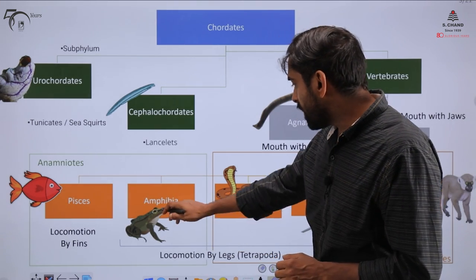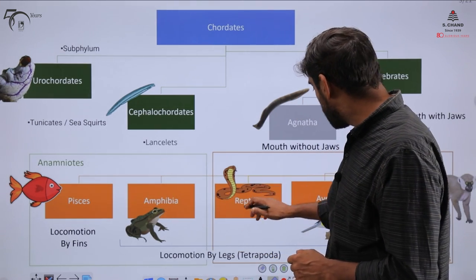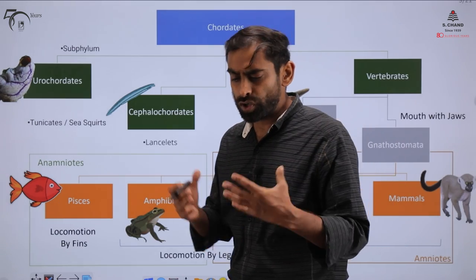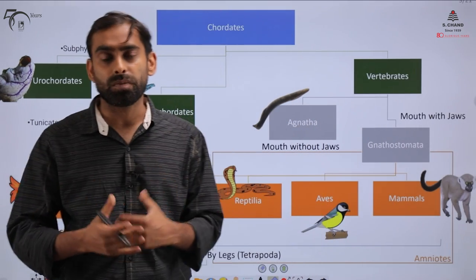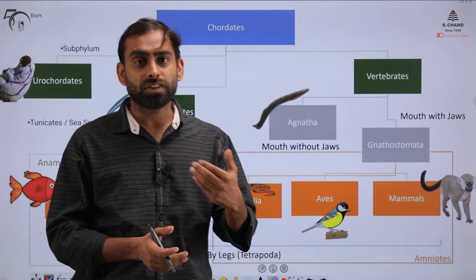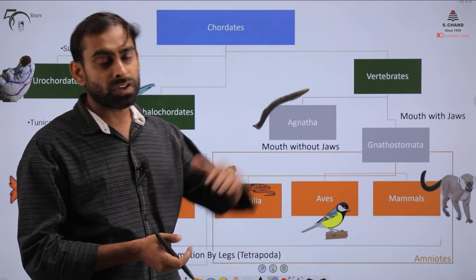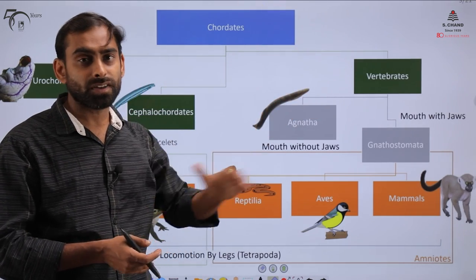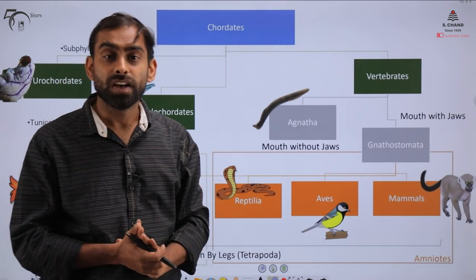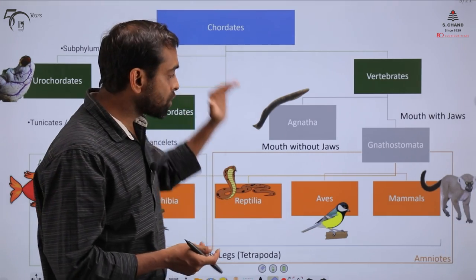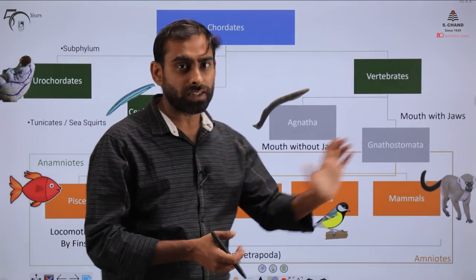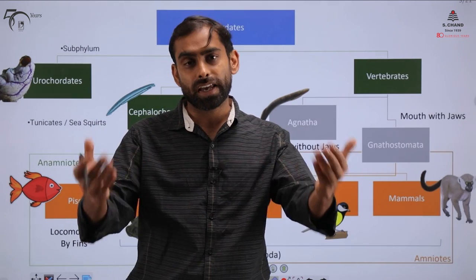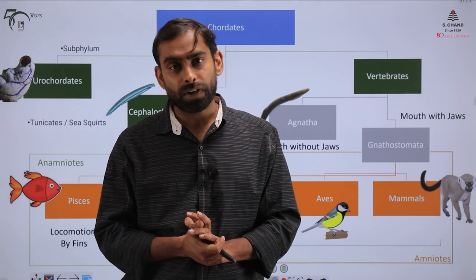The five classes of Gnathostomata are: Pisces, Amphibia, Reptilia, Aves, and Mammals. You should remember that linear taxonomy is based on taxon groups, which starts from Kingdom, then Phylum, Class, Order, Family, Genus, and Species. We are going in that same order, and in these five classes we will discuss them sequentially across this video and the next videos.